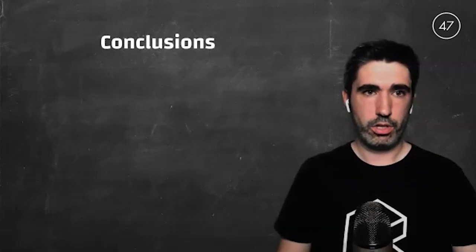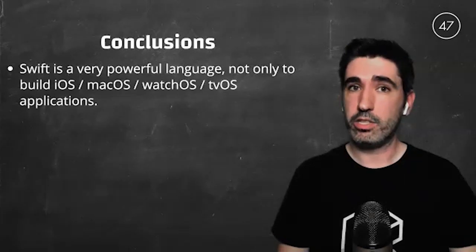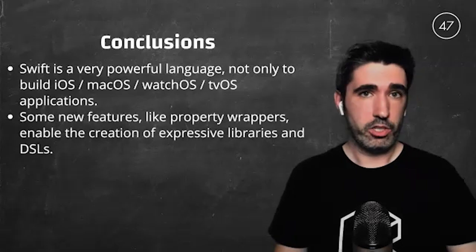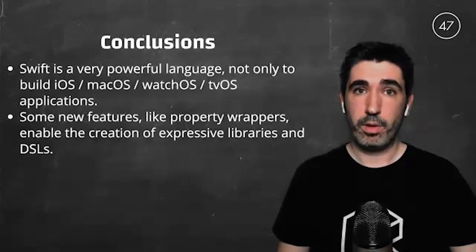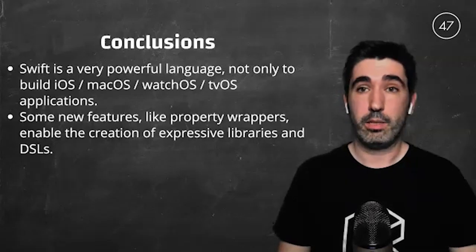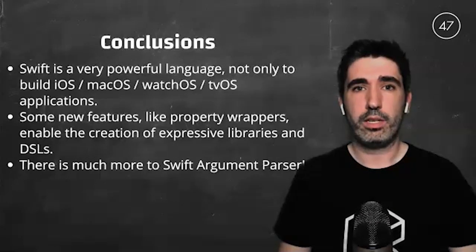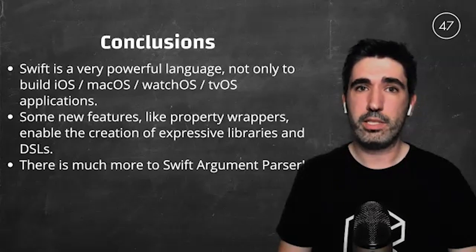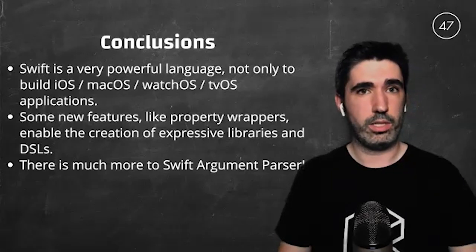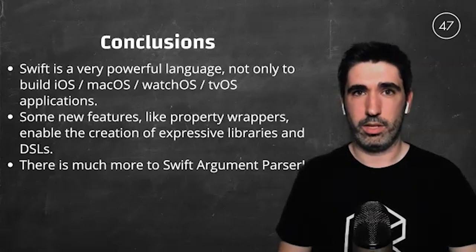In conclusion, Swift is a very powerful language not only for building applications in the Apple ecosystem. New features like property wrappers enable the creation of very expressive libraries and DSLs, but we have to be careful about their disadvantages. We have covered just a small part of what Swift Argument Parser can provide, and an even smaller piece of what we can achieve with command line tools. I encourage you to go look at the documentation, which is quite extensive.